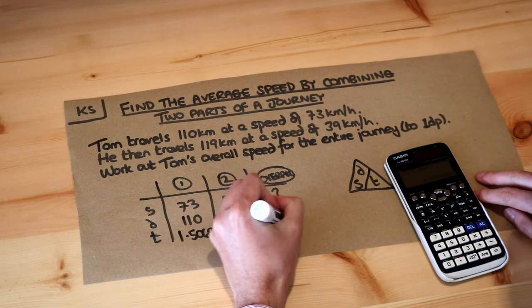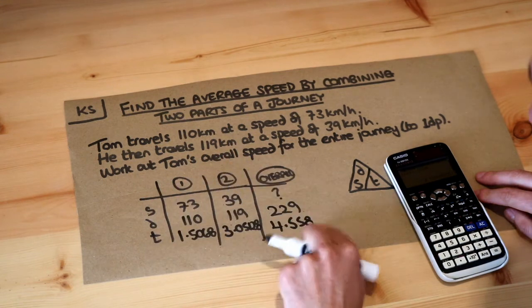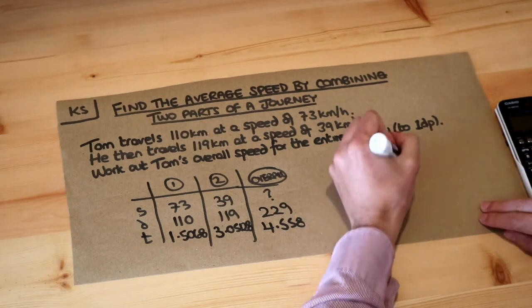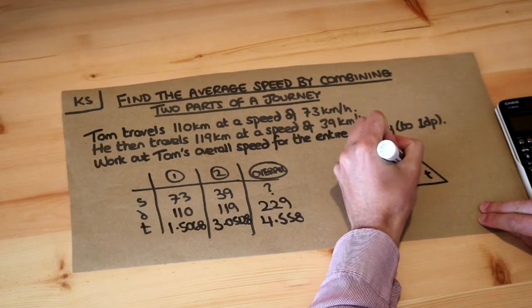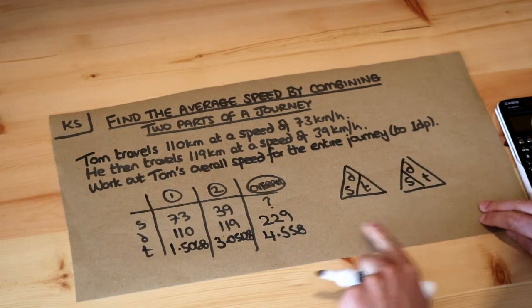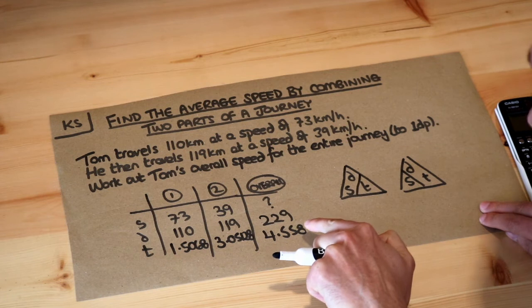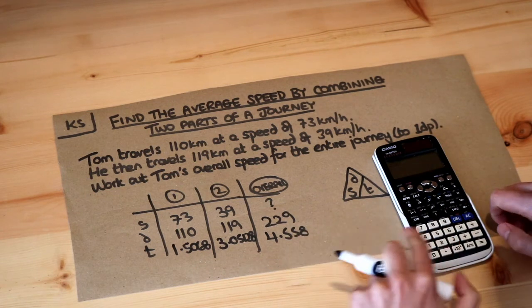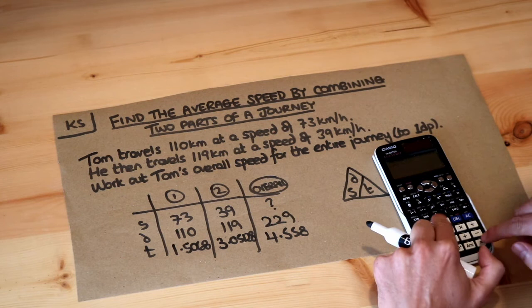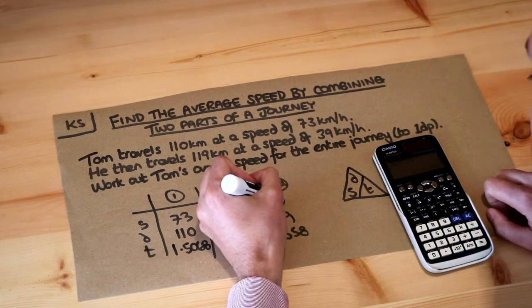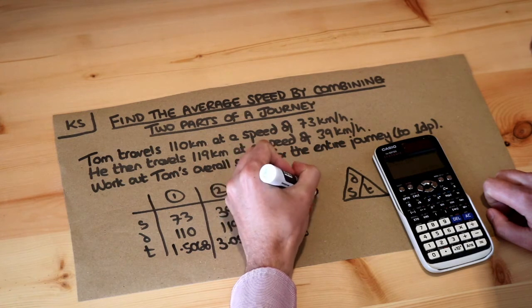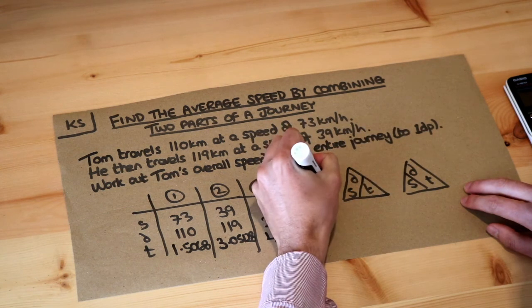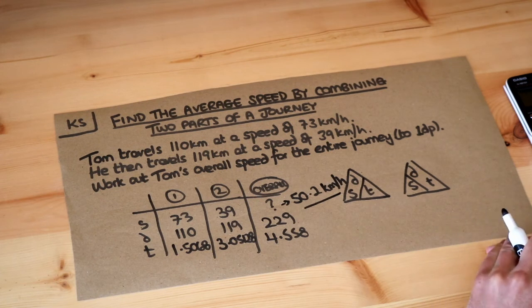Adding those two times together gives a total time of 4.55808. Now we want to work out the overall speed. Speed equals distance over time, so we take the overall distance of 229 divided by the overall time of 4.558, and that gives a speed of 50.2. At this point I'll put in the units — this is the final answer — and the speed is 50.2 kilometers per hour, to be consistent with the other units.